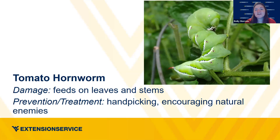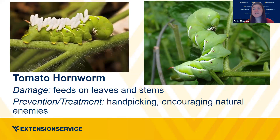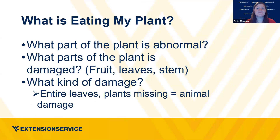Tomato hornworm — they actually look kind of cute if they didn't do so much damage. They feed on the leaves and stem of tomatoes and other plants in the tomato family. Handpicking is ideal — if you've got a little kid, this is the best job for them, because once you find them they're fairly easy to pick off. There's a type of wasp that lays its eggs on the tomato hornworm, and as the eggs hatch they feed on the hornworm and kill it. So if you ever see one covered in white cocoons, that's nature doing its work — just leave it alone.